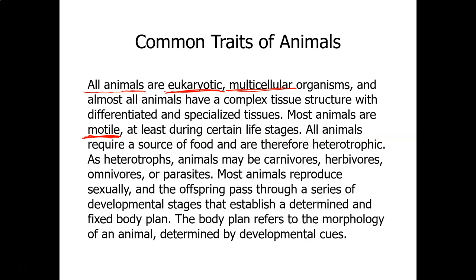All animals require a food source, so they're heterotrophs. And they can be carnivores, herbivores, omnivores, or parasites. Carnivore means meat-eating. Herbivore means plant-eating. Omnivore means both. And parasite means they live off of a host. Most animals reproduce sexually and have a fixed body plan.